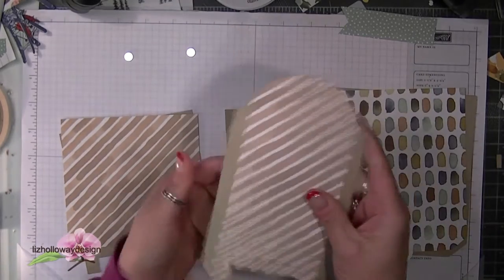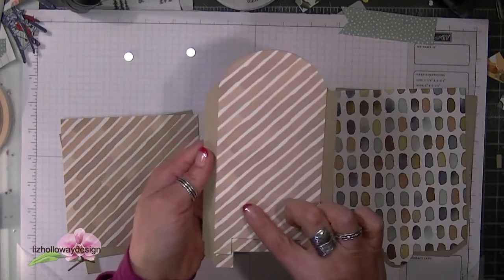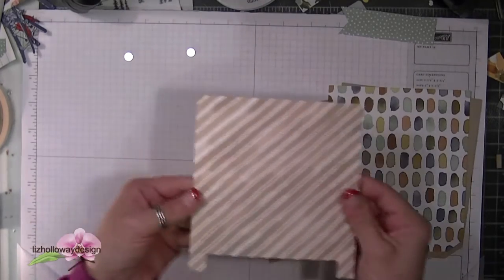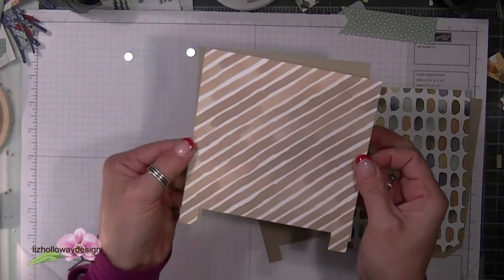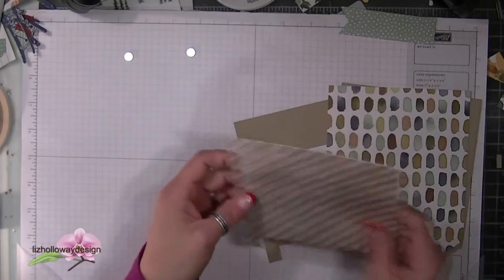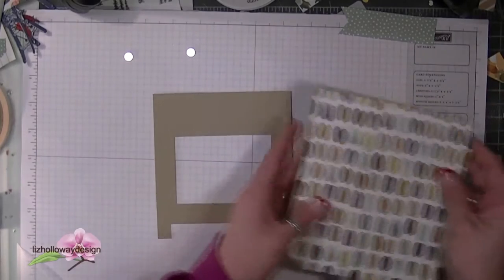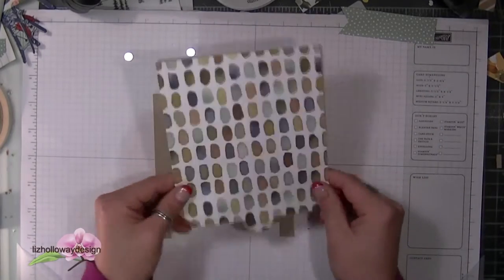Once you have cut out all your cardstocks, crease all the perforated cuts well and use your bone folder to crease the edges. You want to make sure that they are nice and crisp, and then you're going to add tear and tape close to the perforated edges.